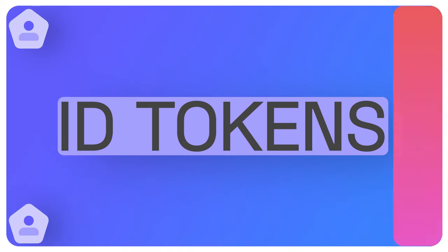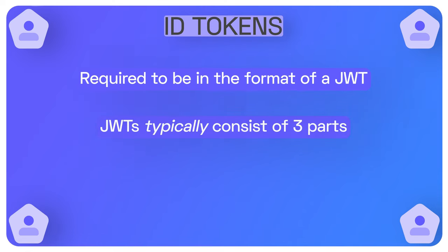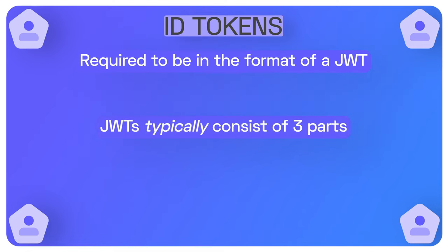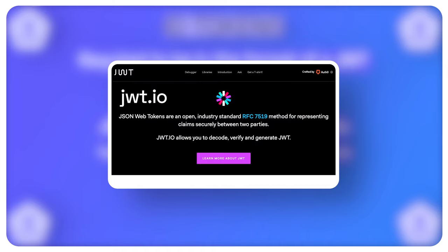For ID tokens, these are specifically encoded as a JWT or a JSON web token, also referred to as JOTs — although I still don't quite get that — so I'm going to use JWT to refer to JSON web tokens. ID tokens are required to be in the format of a JWT, and JWTs typically consist of three parts: the header, the payload or the body, and then the signature. If you ever have a JSON web token and you want to see the information inside of it, you can head over to JWT.io to decode that information.